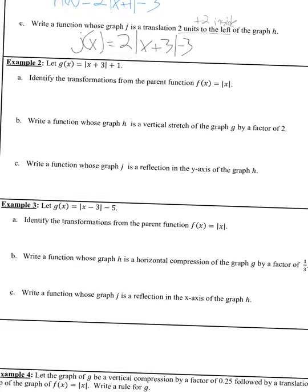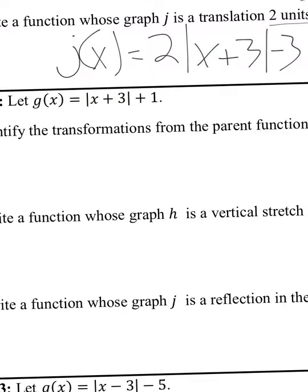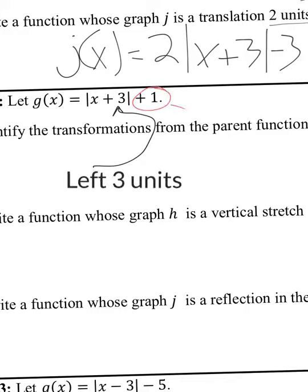Example 2: let G of x equal the absolute value of x plus 3, plus 1. Identify the transformations from the parent function f of x equals the absolute value of x. I have a plus 3 on the inside, so that's going to make it go left 3 units. And then a plus 1 on the outside, so that makes it go up 1 unit.